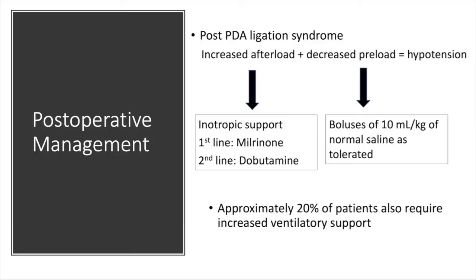One of the main concerns with post-operative management is post-ligation cardiac syndrome. It occurs in up to 50% of very premature neonates, typically 6 to 12 hours after PDA closure, and is characterized by hypotension requiring inotropic or vasopressor support and respiratory insufficiency. By closing off the low-pressure pulmonary circuit, PDA closure leads to increased afterload in the left ventricle and simultaneously decreased LV preload, which is poorly tolerated by neonates and responsible for the hypotension that commonly ensues.